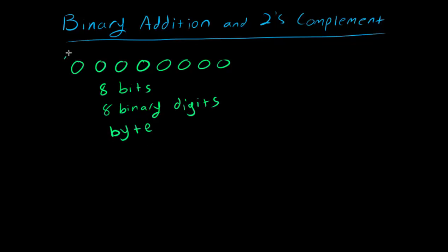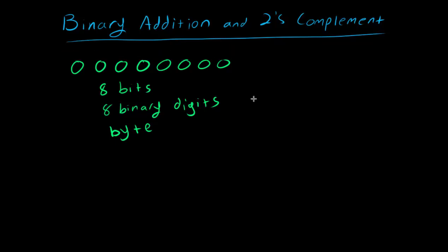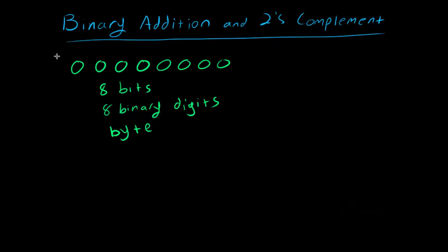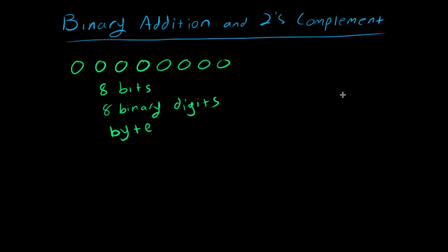A single byte is 8 binary digits. Our 8-bit computer stores all integers — positive and negative — in groups of 8 binary digits, in groups of bytes. A 32-bit computer stores numbers in groups of 32 bits, and a 64-bit computer uses groups of 64 bits. The storage size is really important because we need to know how to represent both negative and positive numbers.